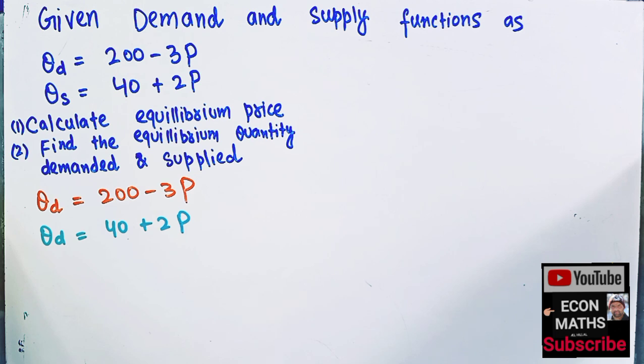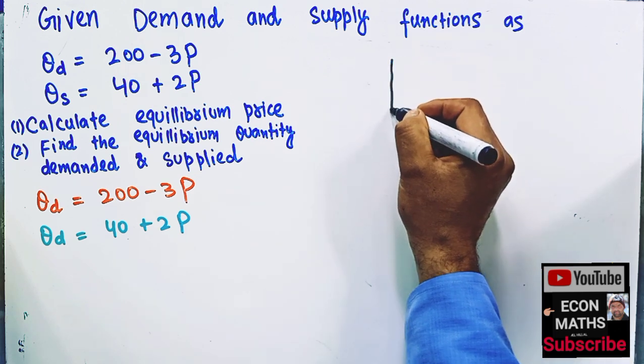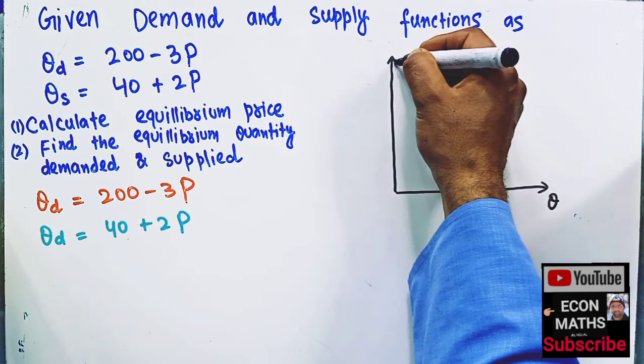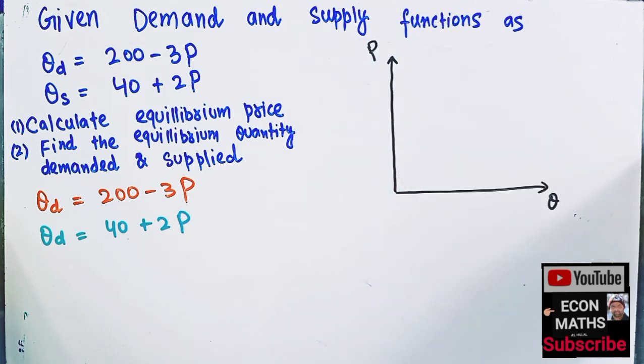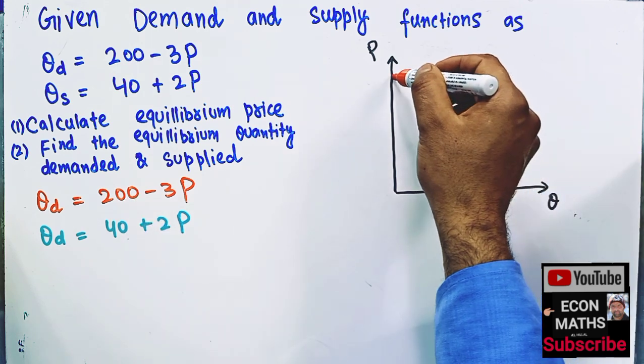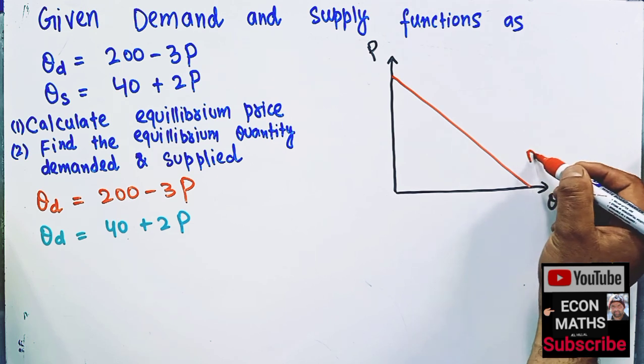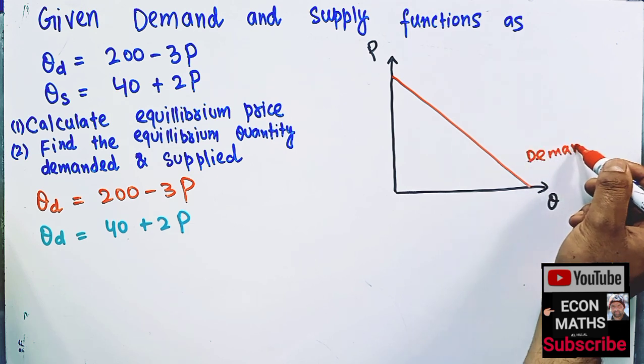If we draw it on the graph, what exactly it looks like? We have quantity on the horizontal axis and price on the vertical axis. So we have a downward sloping demand curve. This is our demand curve, this is our demand function.